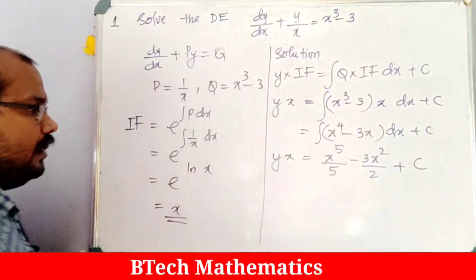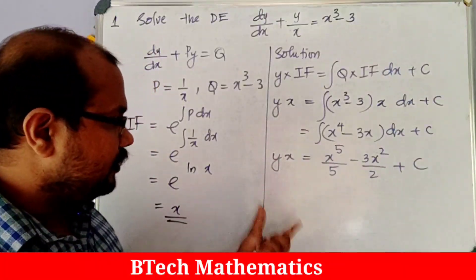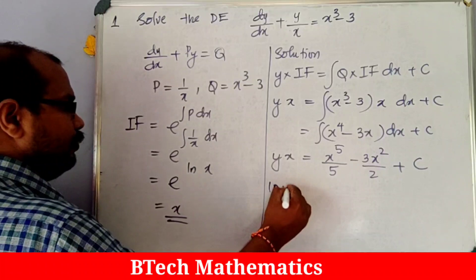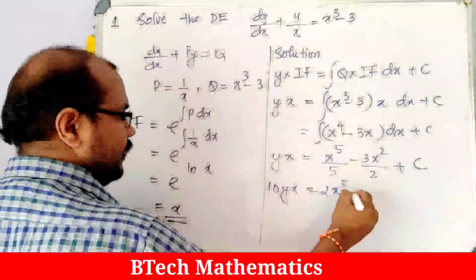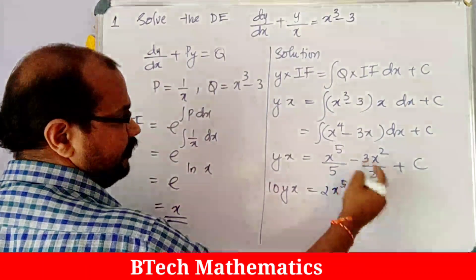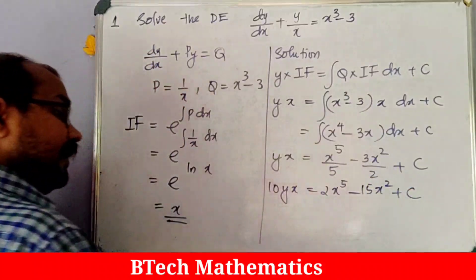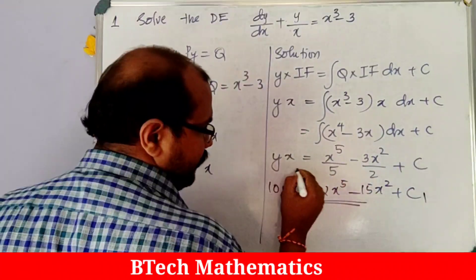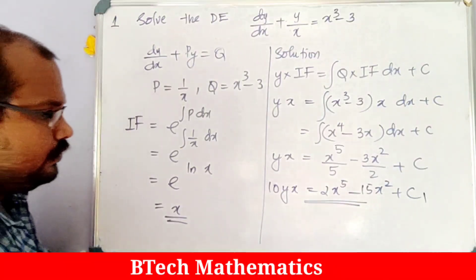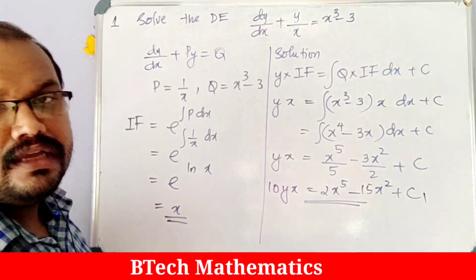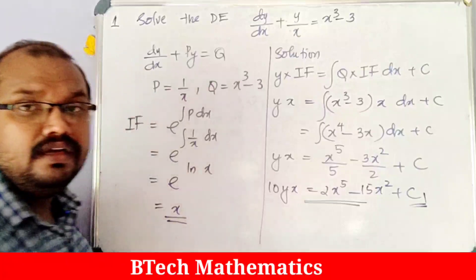To simplify with a common denominator, multiply throughout by 10: 10xy = 2x⁵ − 15x² + C₁. This is the general solution because it contains the arbitrary constant C₁.